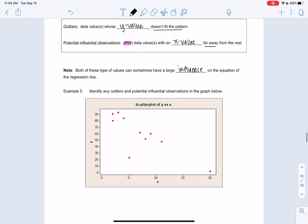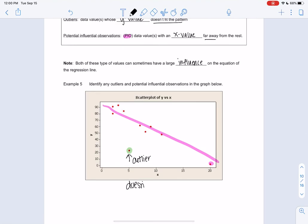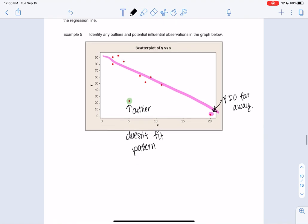So an outlier is one that doesn't fit the pattern. So kind of, there's the pattern. Yeah, this one's far away, right? But this one doesn't fit the pattern. So this would be the outlier. Versus the one over at 20, it's far away, but it fits the pattern. That would be an example of a PIO. So hopefully that helps with the difference.